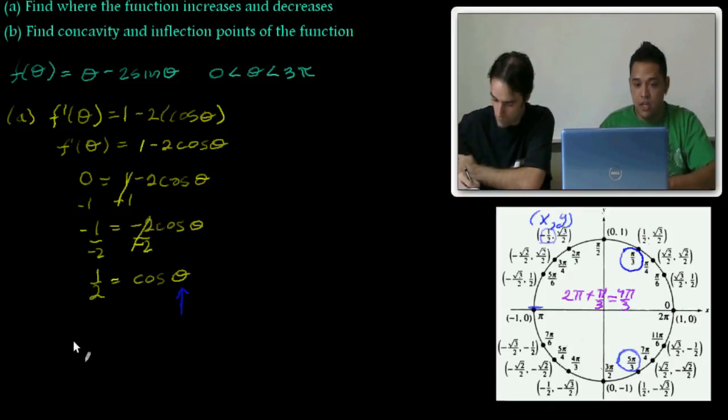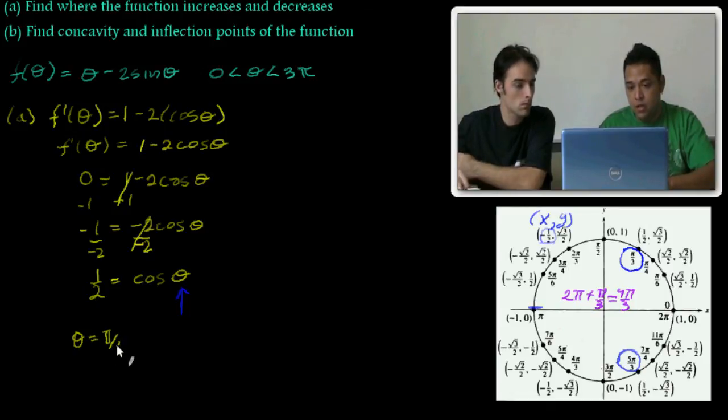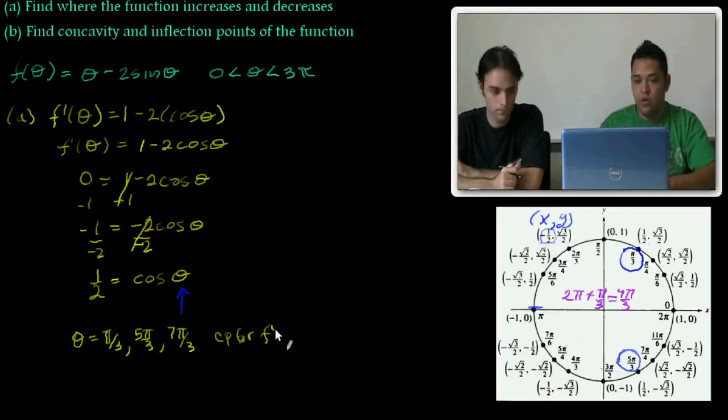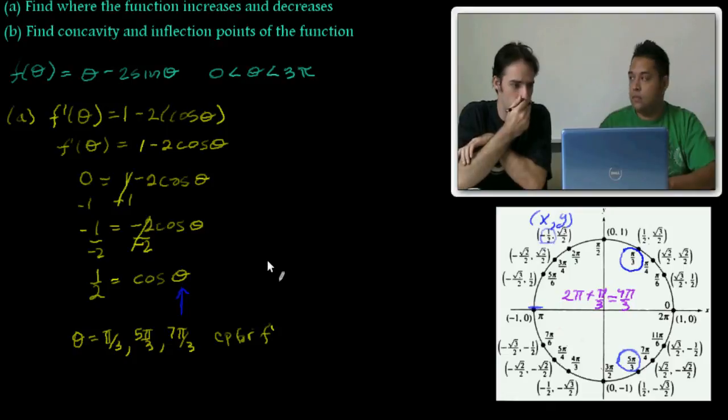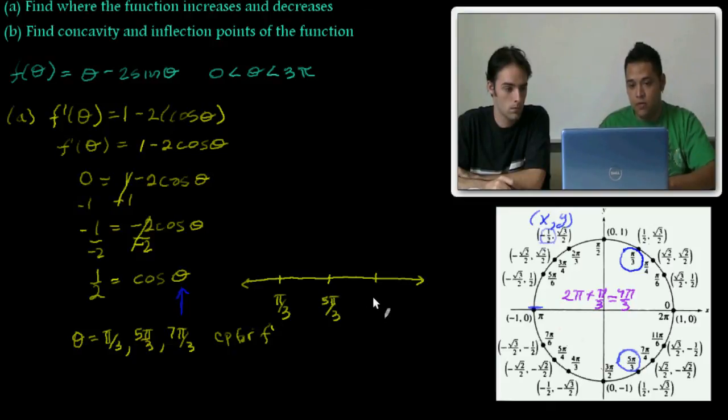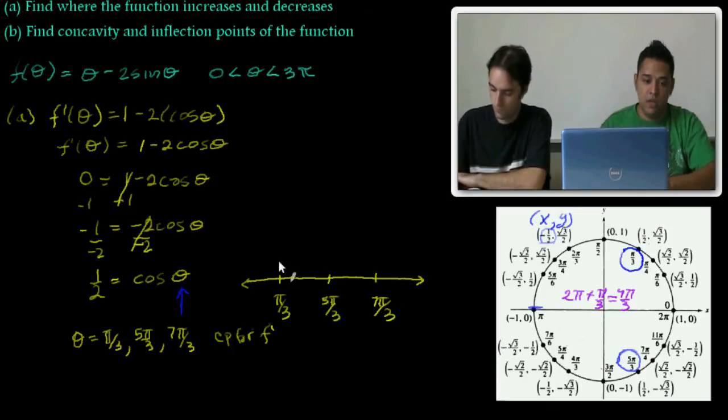And those are our critical points. Theta equals pi over 3, 5 pi over 3, and 7 pi over 3. These are our critical points for the first derivative. What do we do with those? We're going to put them on a number line, and then we need to find test points in between each of them.